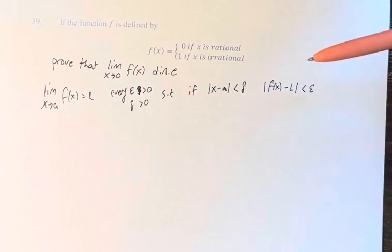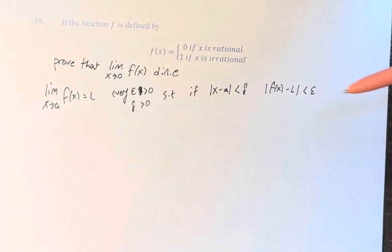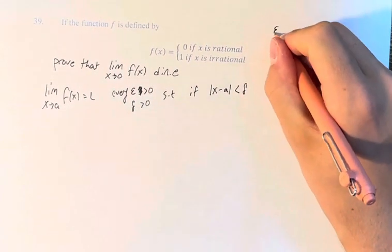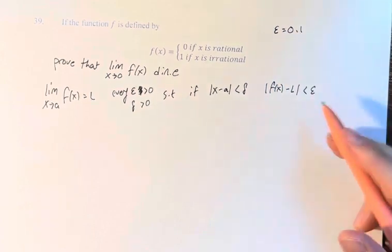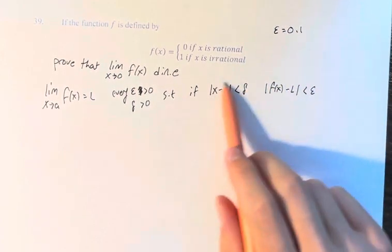Right? So this basically means for any epsilon that we choose, and in this problem we're going to choose 0.1, there is an associated delta for which this is true.